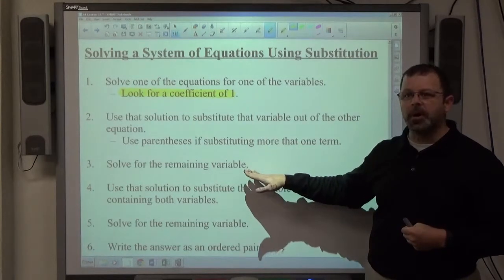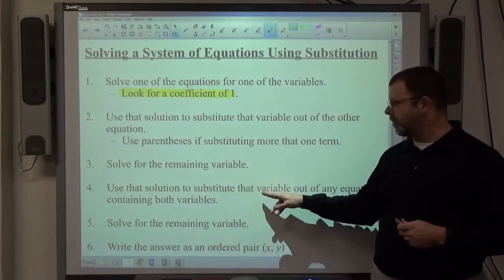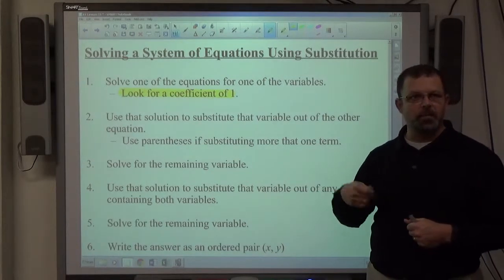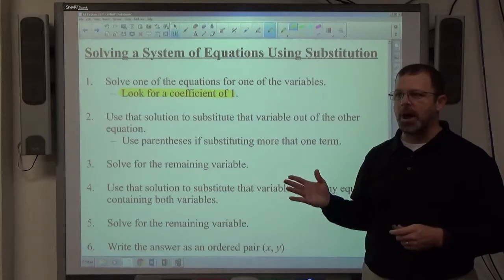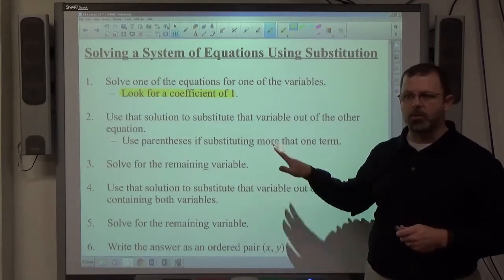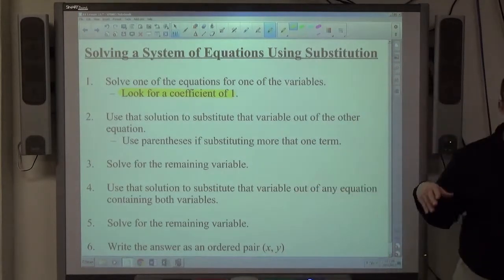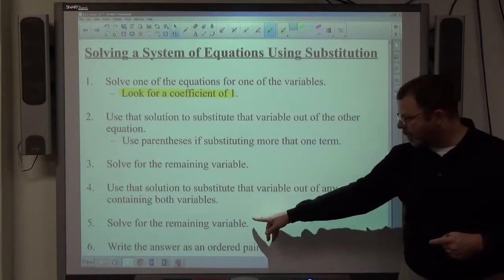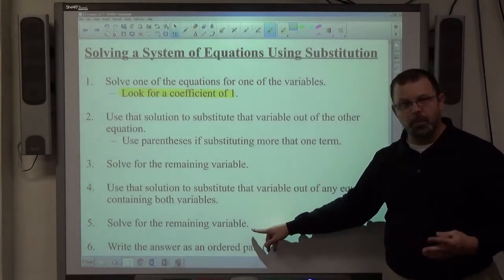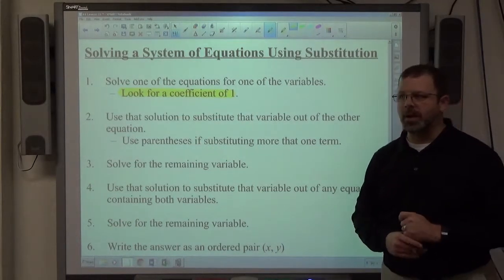Whatever that number is, that's the solution. Substitute that value out into one of the equations that contain both variables. It doesn't matter which one you go back to. I'll recommend the one to go back to when we actually do the problems. But you can go back to any equation in the problem and you'll be able to get the other answer. Once you get the other answer figured out, both x and y, write the answer as an ordered pair x first, y second.